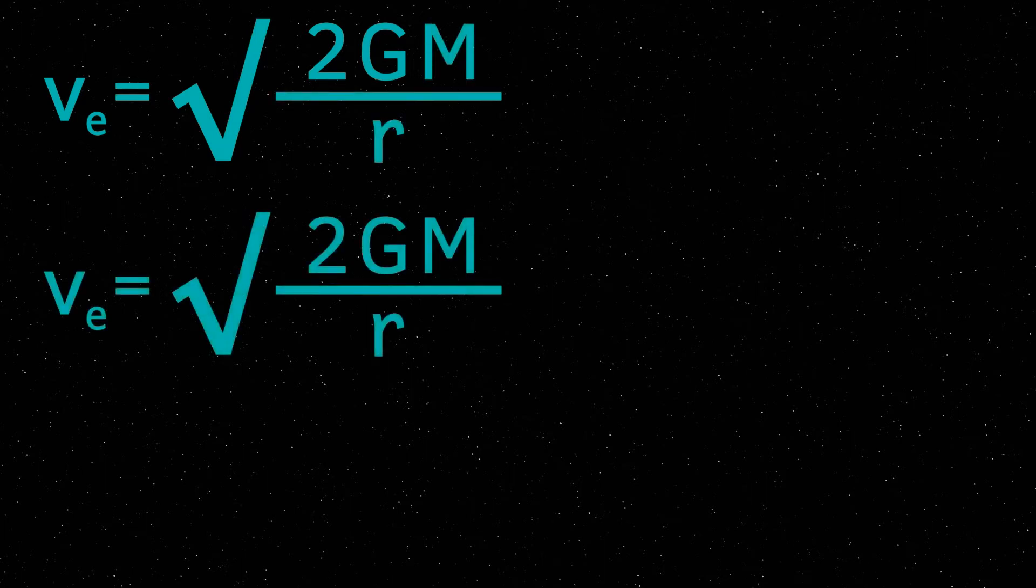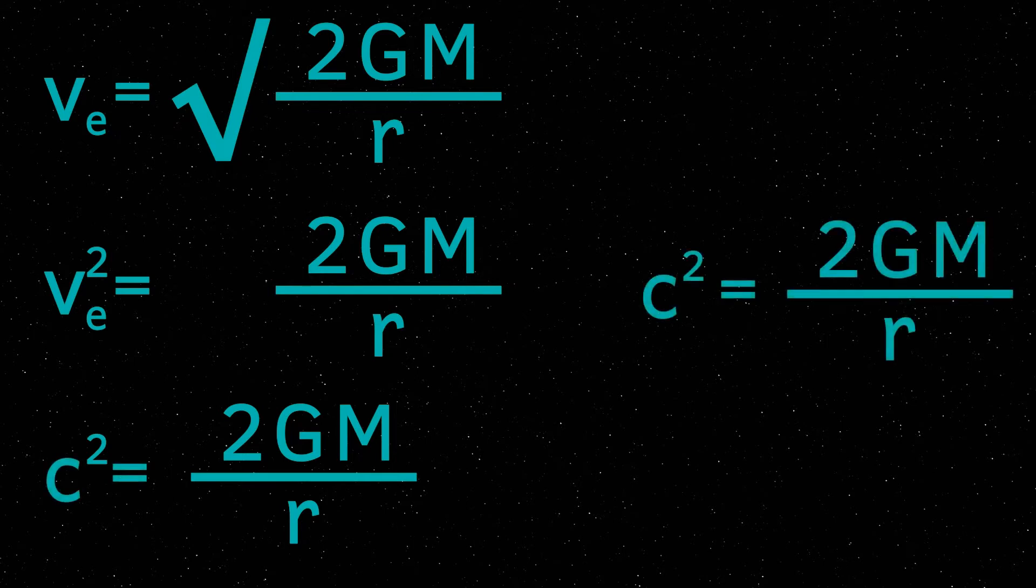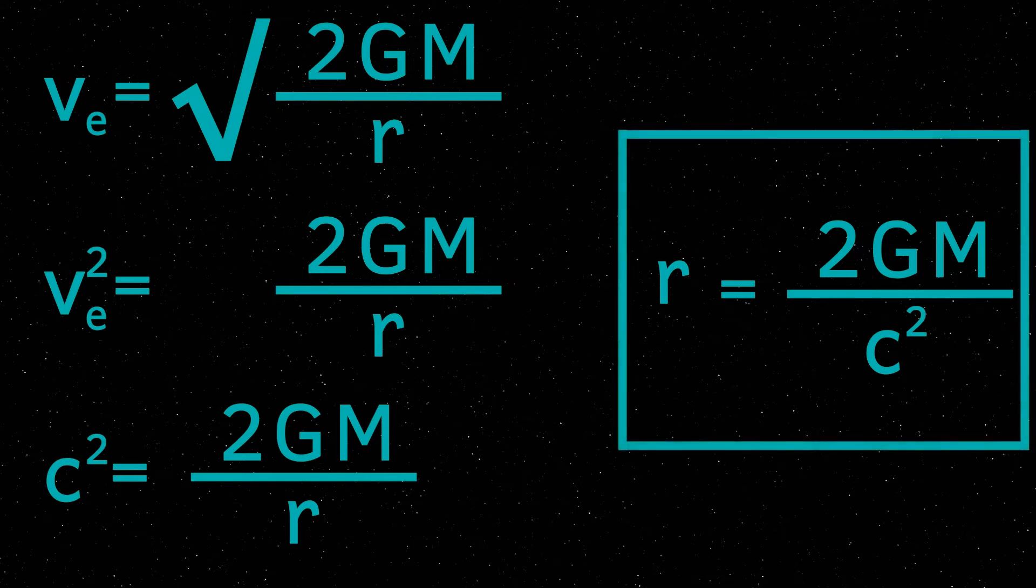We know that for a black hole then the escape velocity must be equal to or higher than the speed of light. This means that if we change the velocity and escape velocity in the equation here to be the speed of light, in other words c, then by rearranging this equation it gives us the equation for working out the Schwarzschild radius.